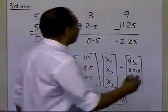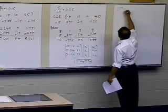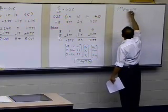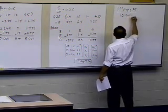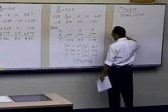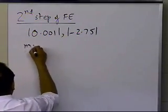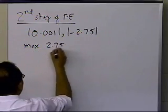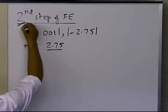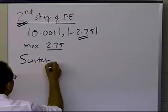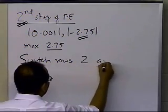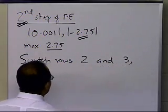Starting the second step of forward elimination, I take 0.001 — the absolute value of that — and minus 2.75 — the absolute value of that — and it turns out the maximum is 2.75. So at the second step of forward elimination, the third row, second column has the maximum element. That means I have to switch rows 2 and 3.